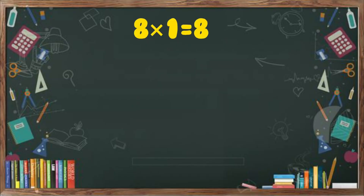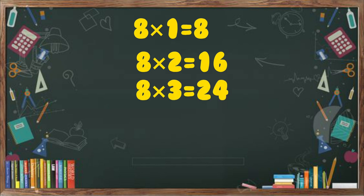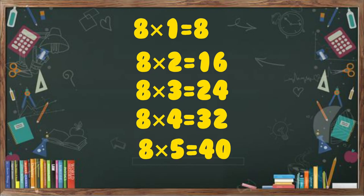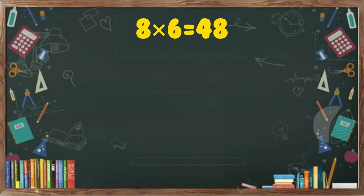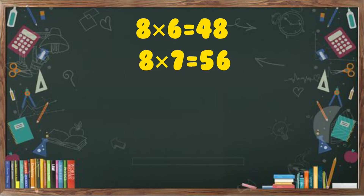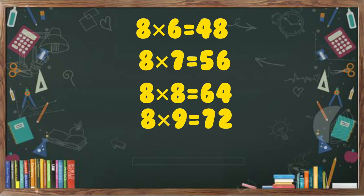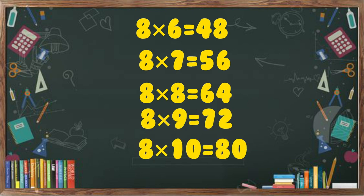Eight ones are eight. 8 1s are 8. 8 2s are 16. 8 3s are 24. 8 4s are 32. 8 5s are 40. 8 6s are 48. 8 7s are 56. 8 8s are 64. 8 9s are 72. 8 10s are 80.